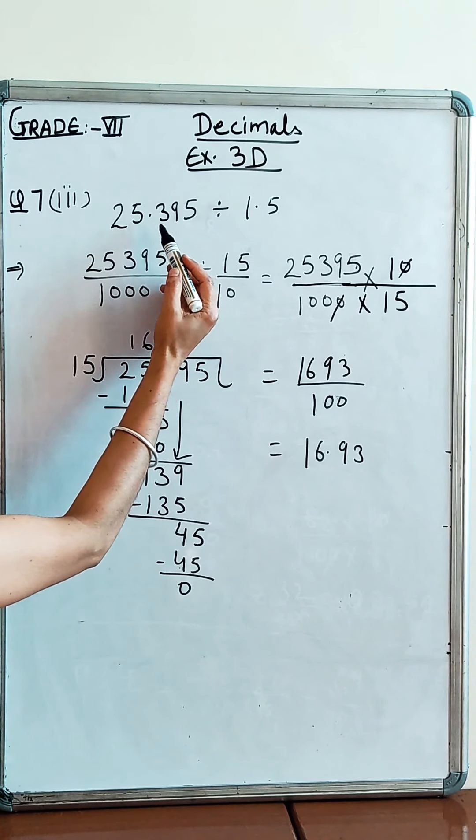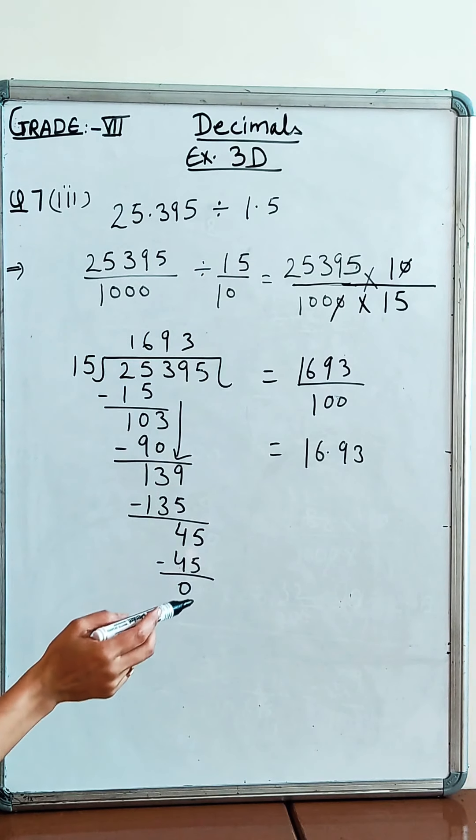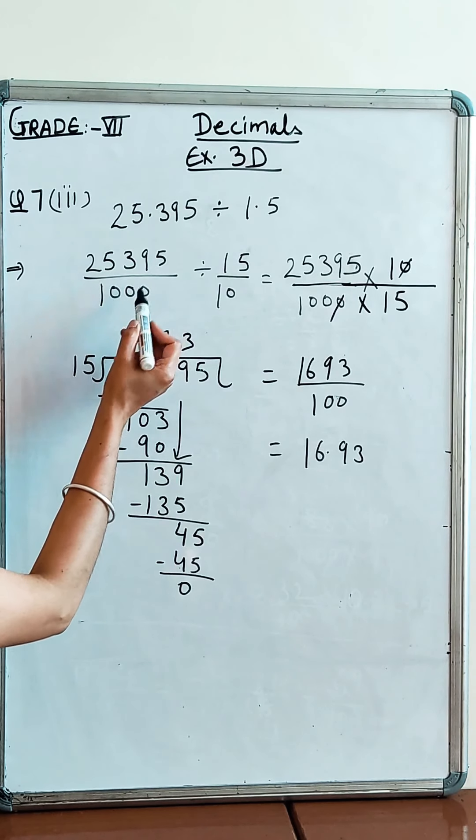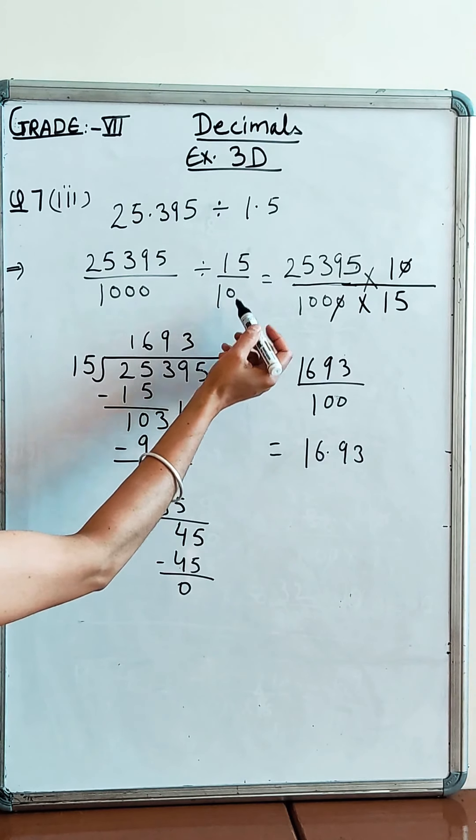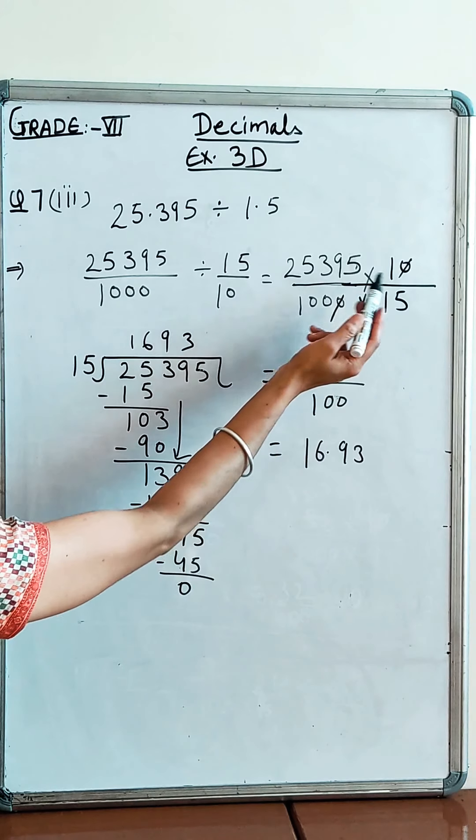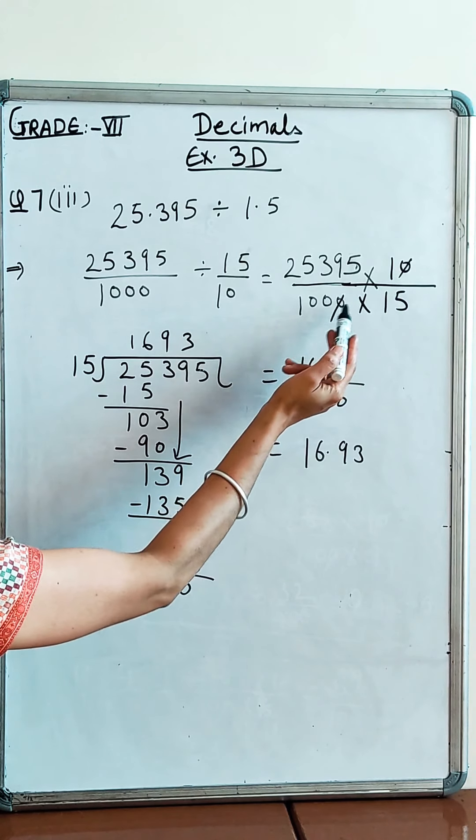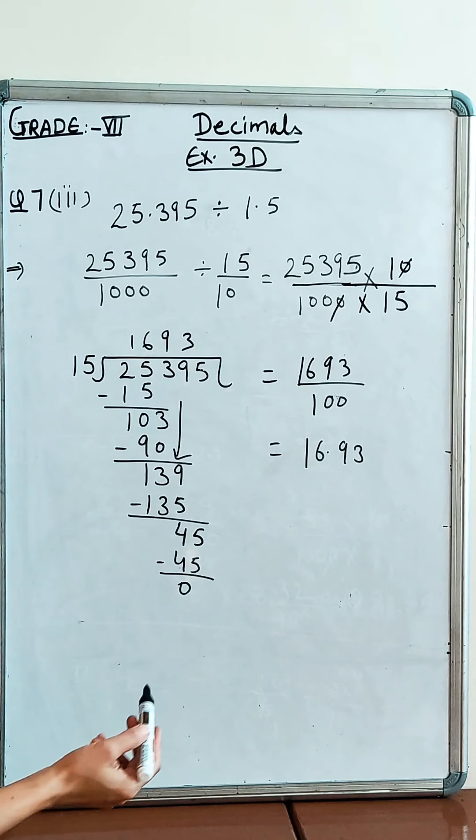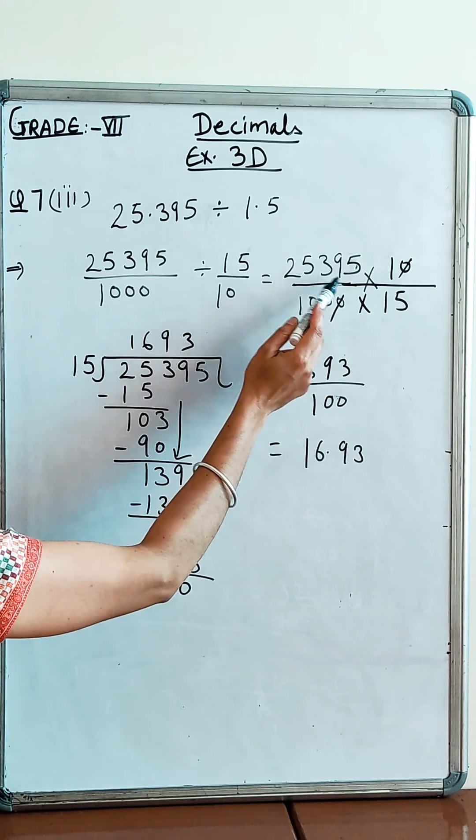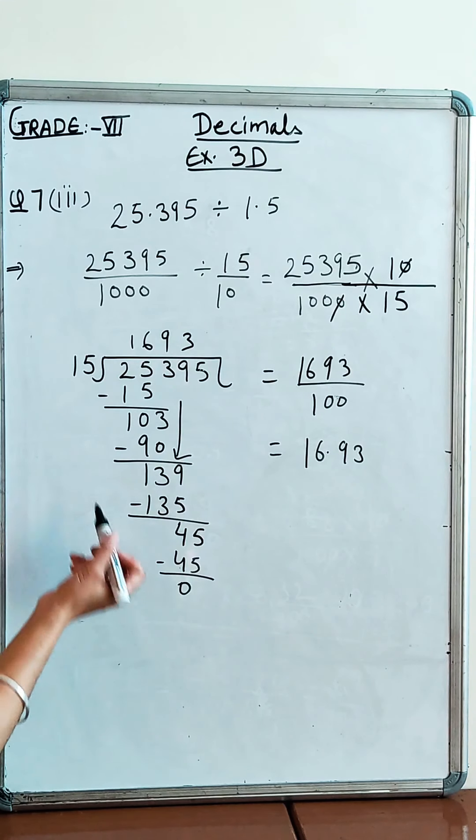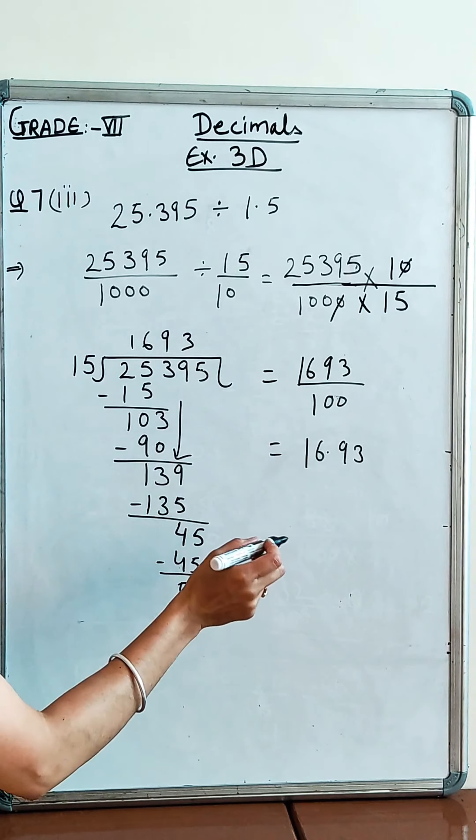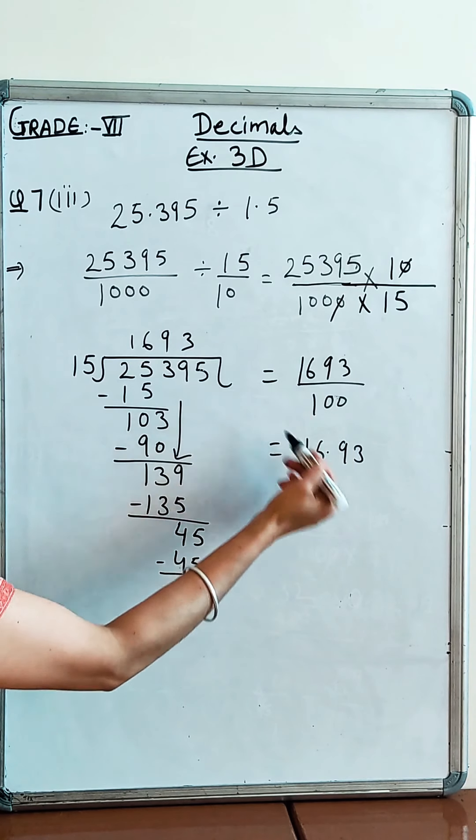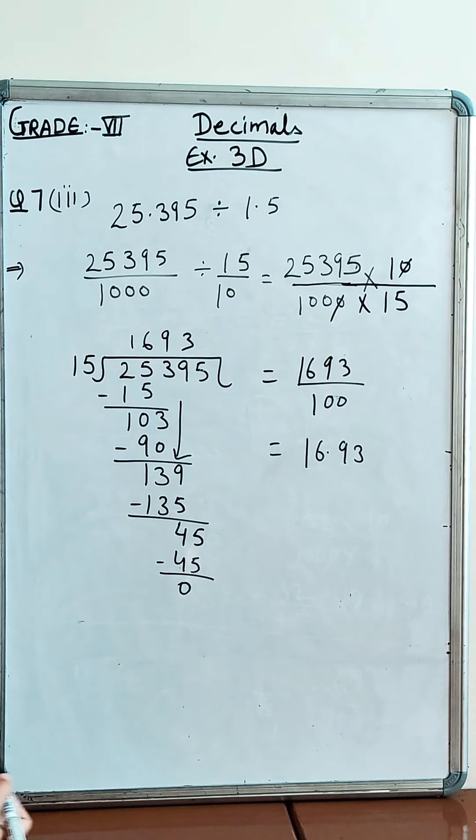Now let us move to part 7 third. You have the number 25.395 divided by 1.5. Same - decimal cancel first. So you have 25,395 over 1000. And here 15 over 10, because decimal has one number, so 15 over 10. Then reciprocal - here it becomes 10 over 15. 25,395 over 1000, and 10s cancel. You divide 25,395 by 15. You get 1693, and denominator is 100. So the answer is two numbers before decimal: 16.93.